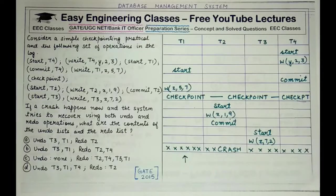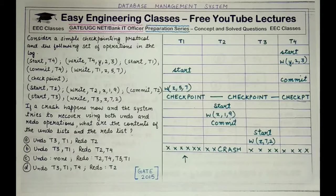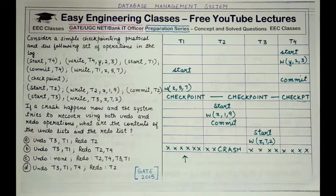Hello friends, welcome to Easy Engineering Classes. In today's lecture, we are starting with another question on DBMS topic, and this question appeared in the GATE 2015 paper. This question is based on transactions, the checkpointing mechanism, and the undo and redo lists when we recover certain transactions after a crash. So let's start with the question and then see how to answer it.